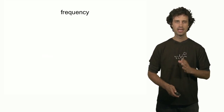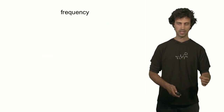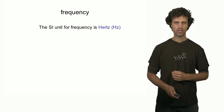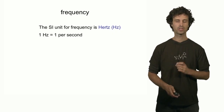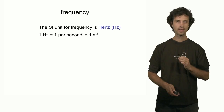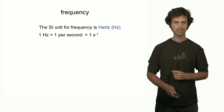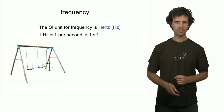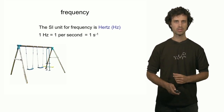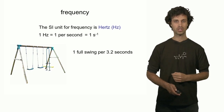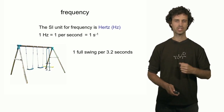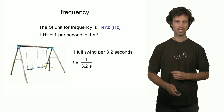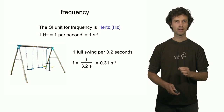Finally, let's look at frequency — a quantity derived from the quantity of time. The unit for frequency in the SI system is the Hertz, defined as 1 Hertz equals 1 time per second, or 1 second to the minus 1. Let's consider a swing set: if a child takes 1 swing in 3.2 seconds, the frequency is 1 over 3.2 seconds, which is 0.31 per second, or 0.31 Hertz.